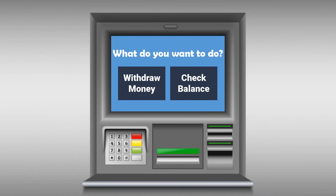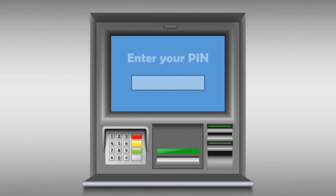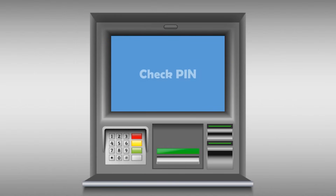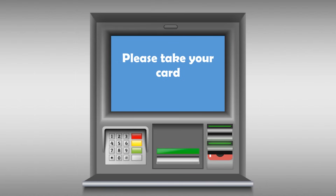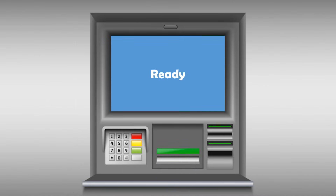We want to withdraw money, so we choose the first option. The machine changes the status to the next screen — it asks you to give the amount of money you want to withdraw. You enter the amount, for example 100, and then hit OK. Once you click OK, the status of the machine changes to PIN. Here you have to enter your PIN and hit OK. Once you click OK, the machine checks your PIN. If the PIN is wrong, the machine asks you to enter your PIN again. If the PIN is correct, the machine's status changes — it asks you to take your card, then the money comes out. Once you took the money, the machine's status changes back to ready.